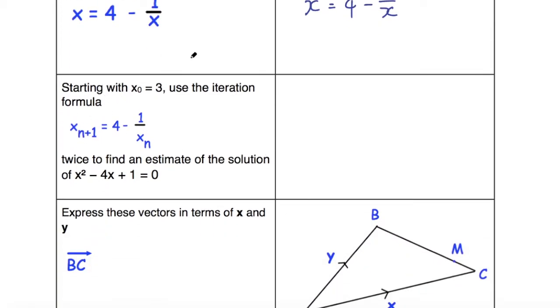Question 3 here says: starting with x₀ = 3, use the iteration formula x_(n+1) = 4 - 1/x_n twice to find an estimate of the solution of x² - 4x + 1 = 0.